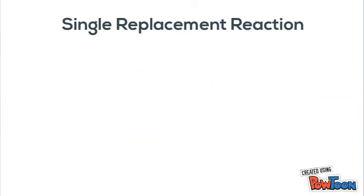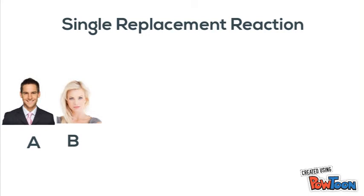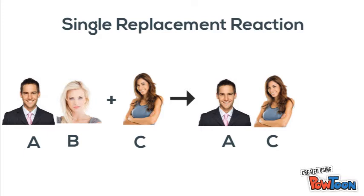What if the single element is not a man? So if you have AB plus a C where the C is another woman, now the women are going to switch places. So what you have is AC plus B.